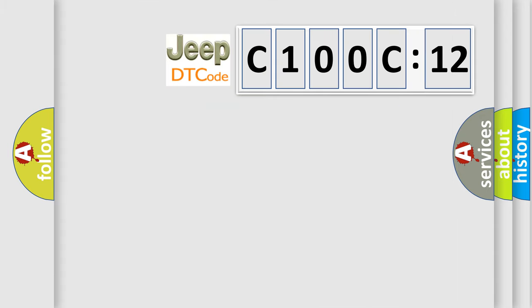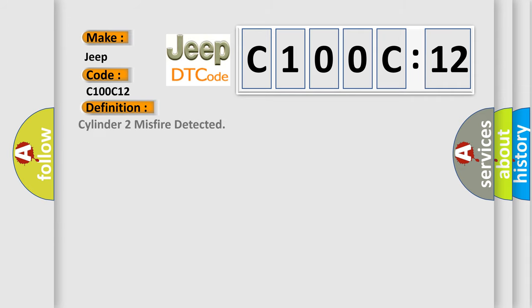So, what does the diagnostic trouble code C100C12 interpret specifically for Jeep car manufacturers? The basic definition is Cylinder 2 misfire detected.